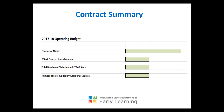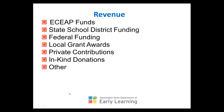A big difference you'll notice in the template from this year is we added a section for revenue. Here are the different revenue sections where you have the opportunity to add funding streams: ECAP funds, state school district funding, federal funding, local grant awards, private contributions, in-kind donations, and any other funding that you have.